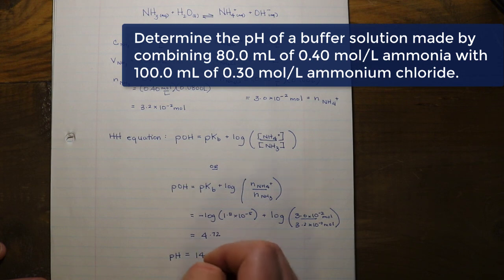Now it is just a matter of calculating the pH, which is going to be 14 minus our pOH. And we get a value of 9.28, which makes sense because we have a basic buffer solution, so we should have it a little more on the basic side of neutral.